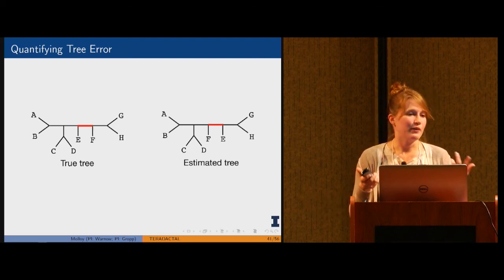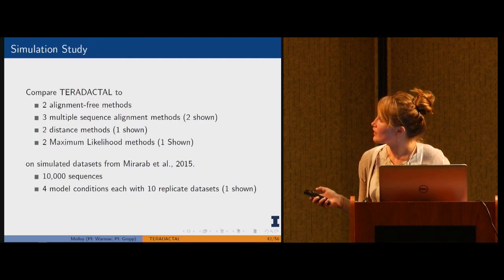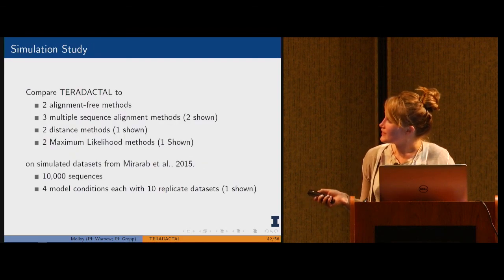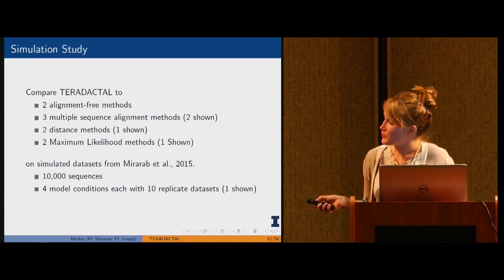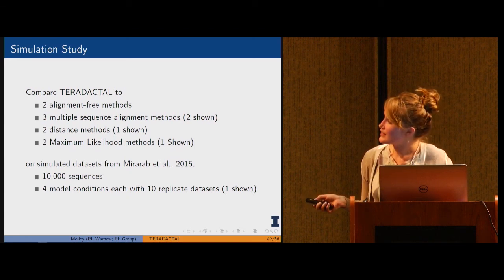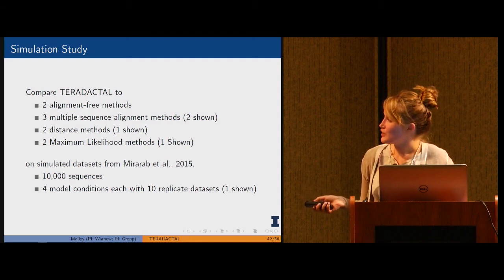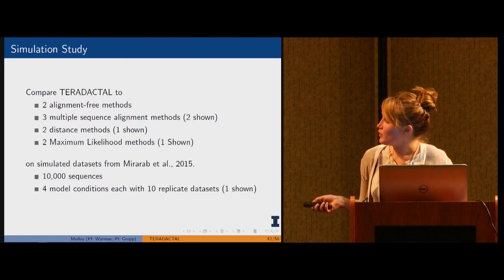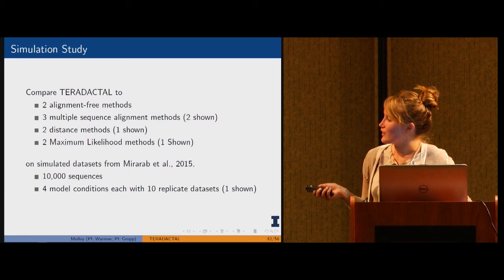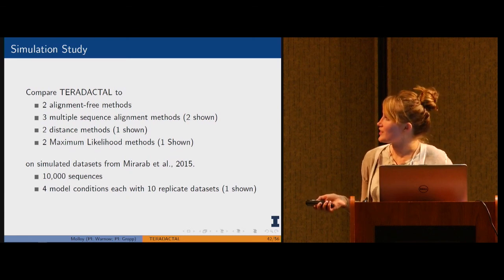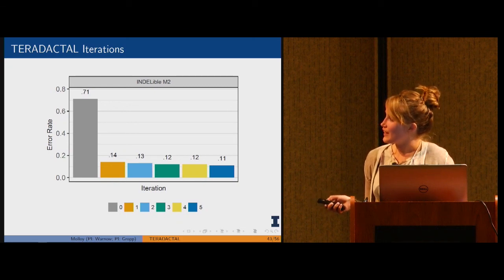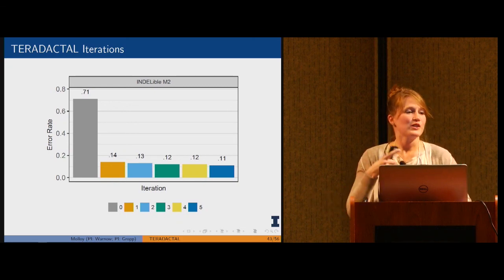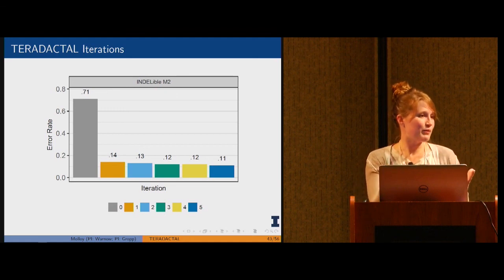We basically did a huge comparison study. We looked at multiple sequence alignment methods, alignment free methods, distance methods, maximum likelihood methods, and we took many simulated data sets from a prior paper with 10 replicates for each model condition. I'll show one of the model conditions today. Before we get going, I'll show pterodactyl, the effect of iterating. That process was iterative, you could take the pterodactyl tree, decompose it to get subsets, and repeat that process.